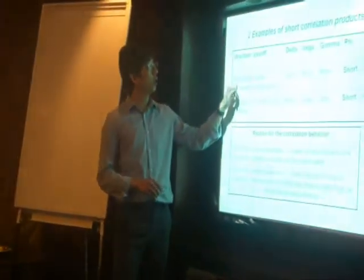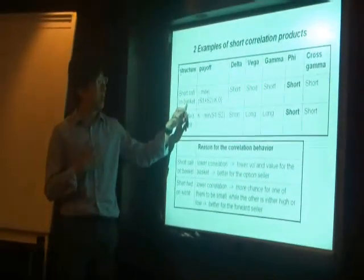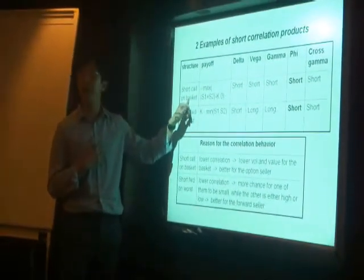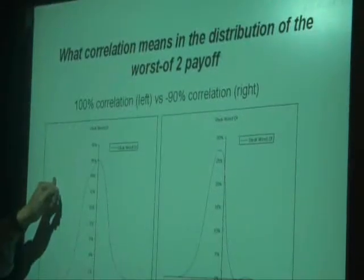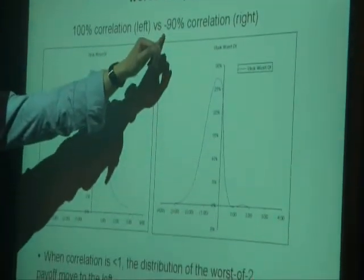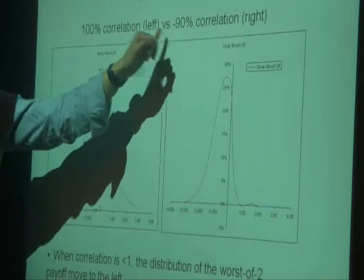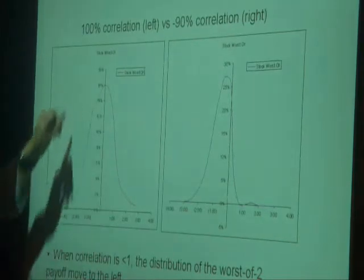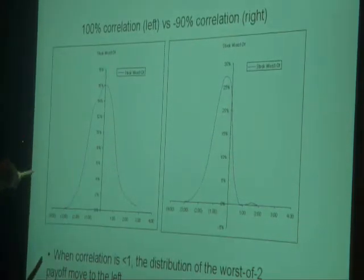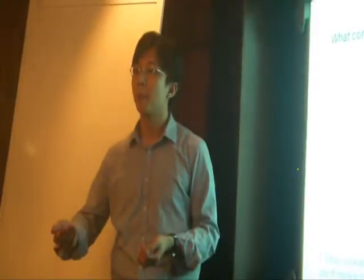One is short the call on basket. As I said, I'm from the investment bank side — I sell that call on the basket. This shows the correlation between two names, and this one shows quite the opposite: minus 90% correlation between the two names. The payoff is plotting the return of this payoff under a 100% correlation assumption. You sell a forward contract on a basket of two.